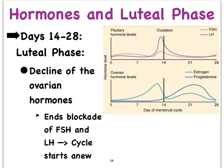If fertilization does not occur, the corpus luteum starts to deteriorate. As a consequence, estrogen and progesterone levels decrease, which removes the blockage on FSH and LH, allowing them to rise again so the whole cycle can start over with the maturation of new follicles.